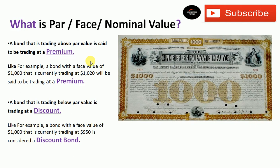...if trading at $950, it is considered a discount bond — meaning $50 less than its par value. So that is it for this video. Hope you learned about par value.